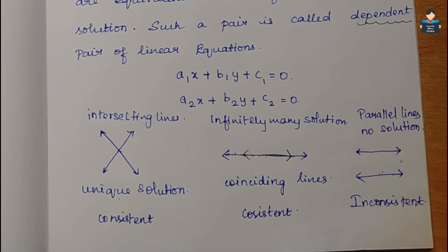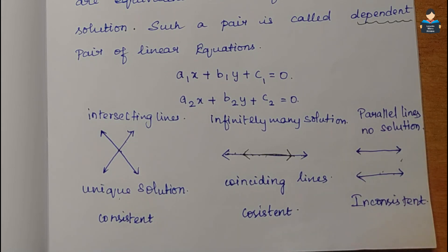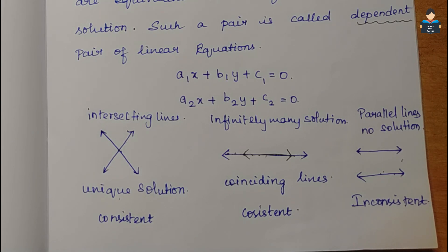To solve using the graphical method, we use an x and y axis graph sheet, create a table form for x values and y values. We plot the two lines on the graph and then check which of the three types it is: intersecting, coinciding, or parallel lines.